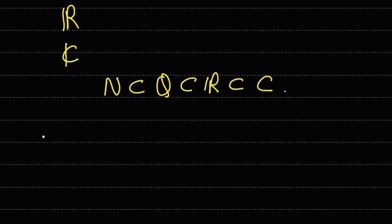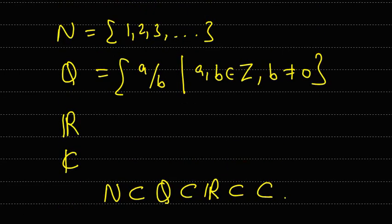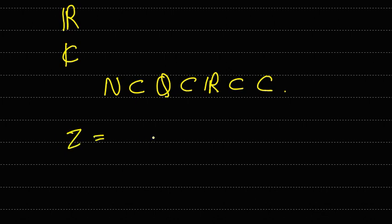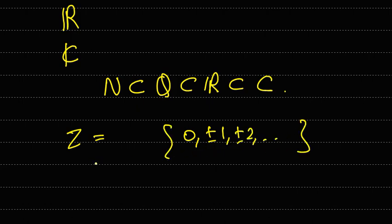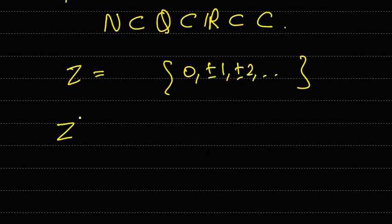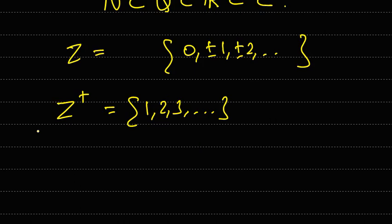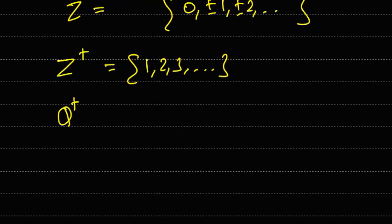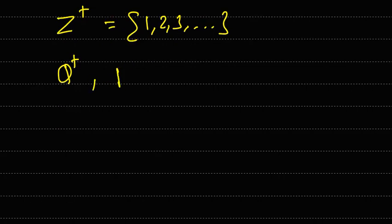Some related notations we will use in our course: Z is the set of integers, which contains 0, ±1, ±2 and so on. Z⁺ (Z with a plus superscript) represents the set of positive integers: 1, 2, 3 and so on. Similarly, Q⁺ represents the set of positive rational numbers, and R⁺ represents the set of positive real numbers. Keep these notations in mind.